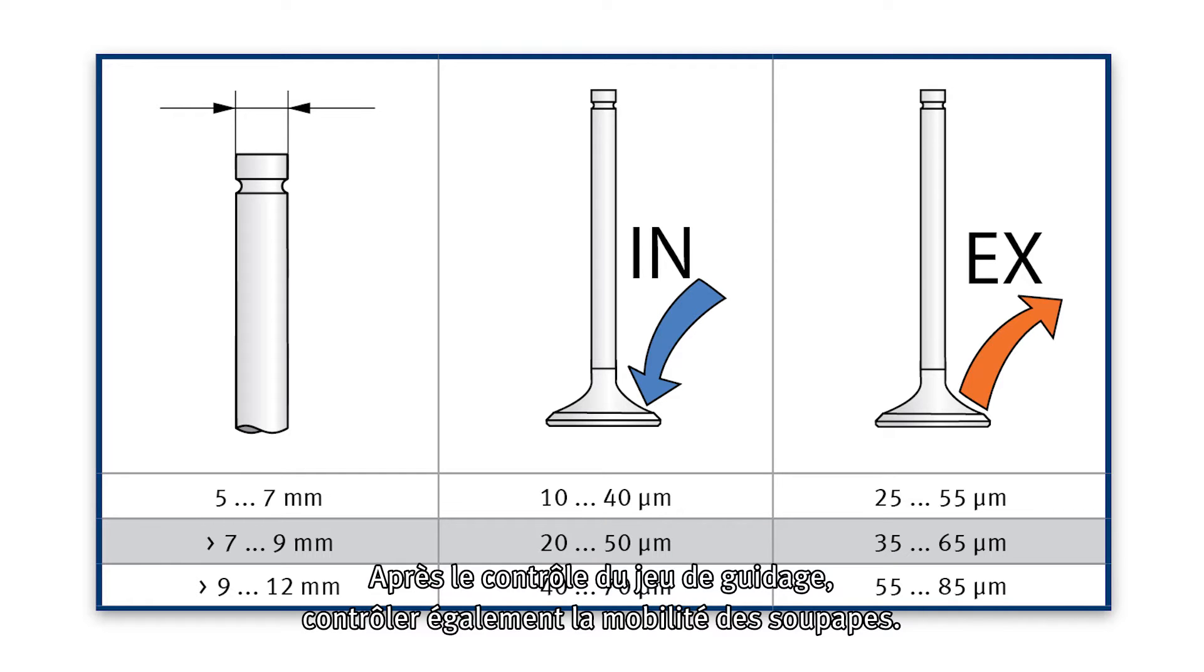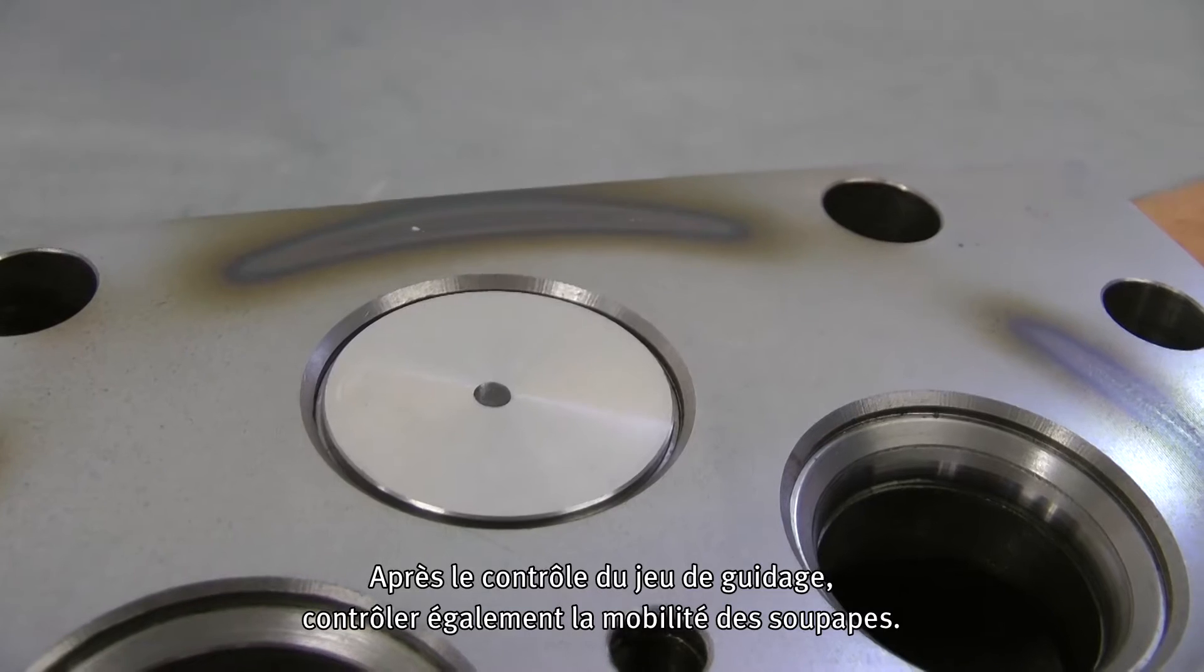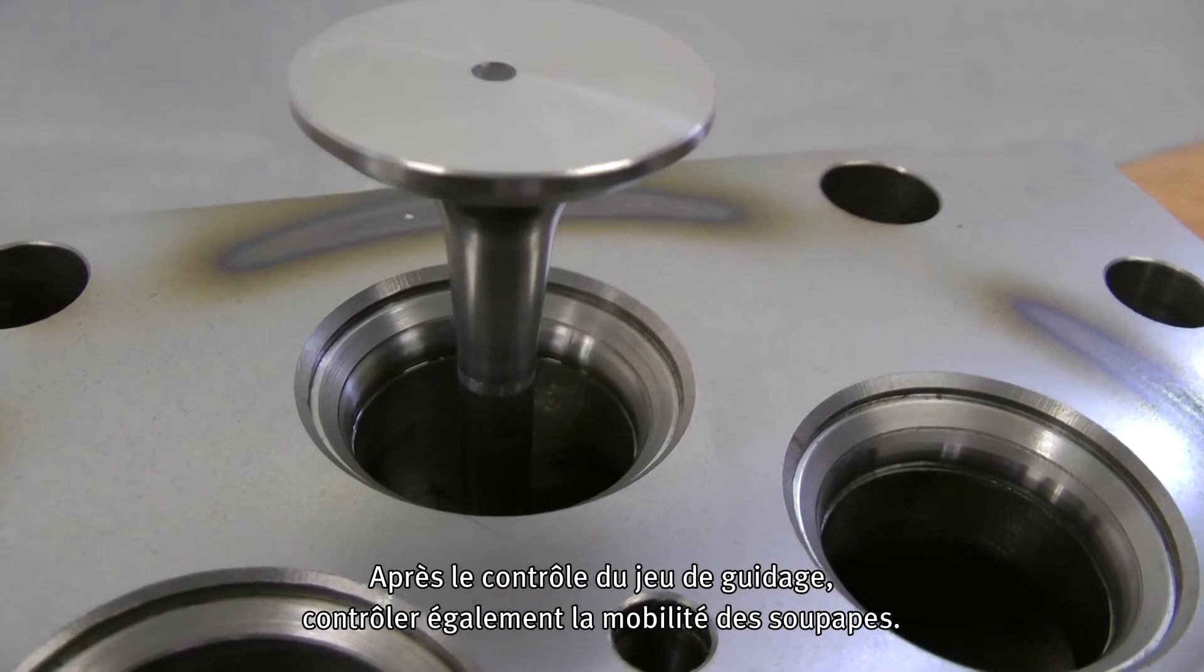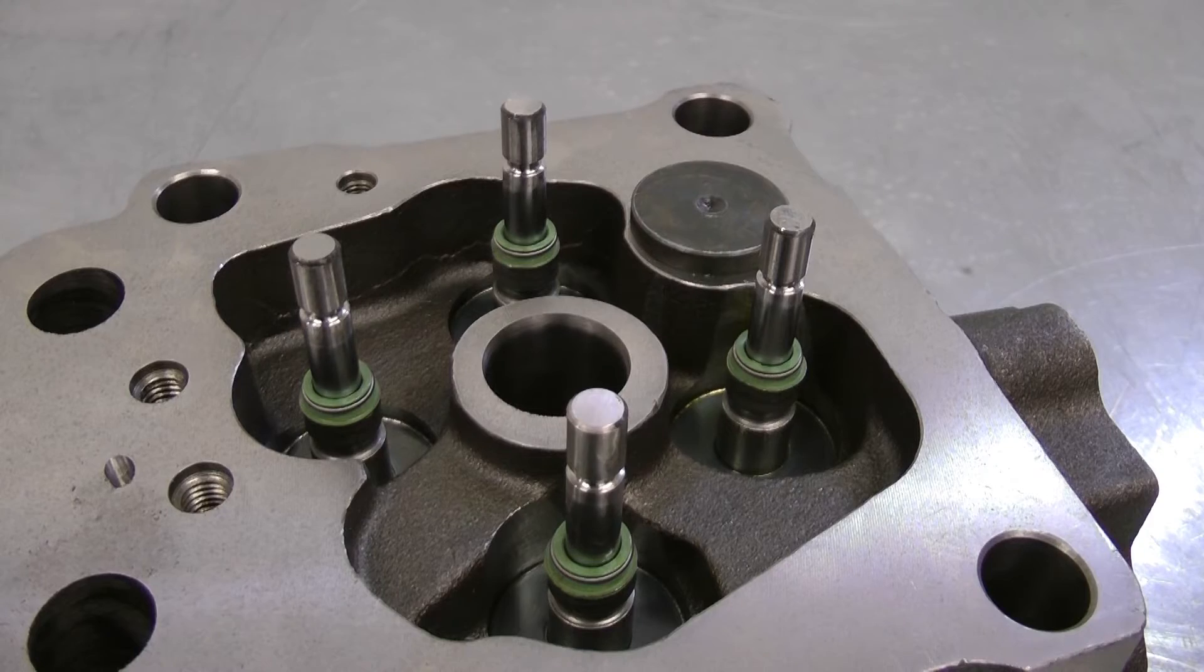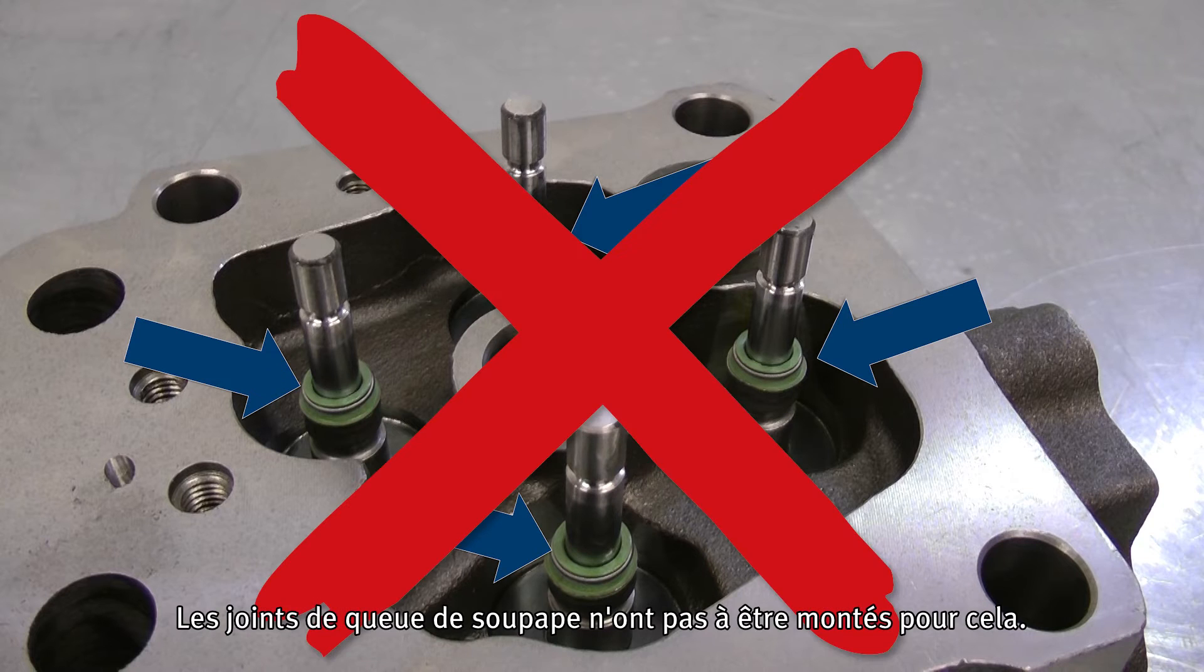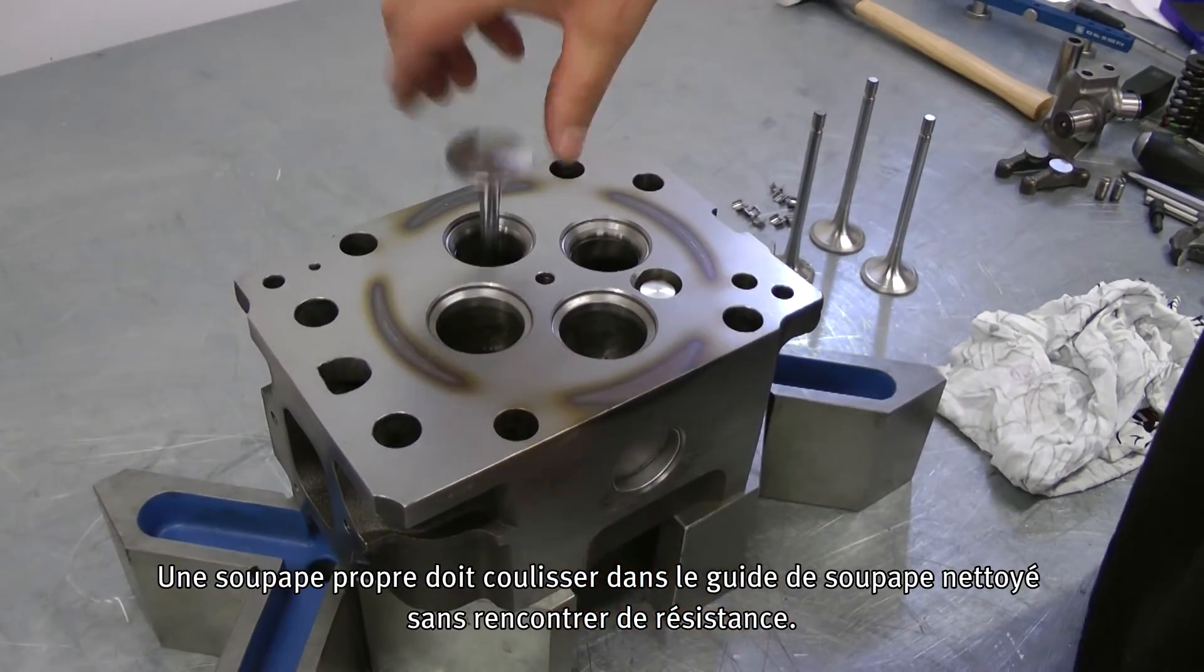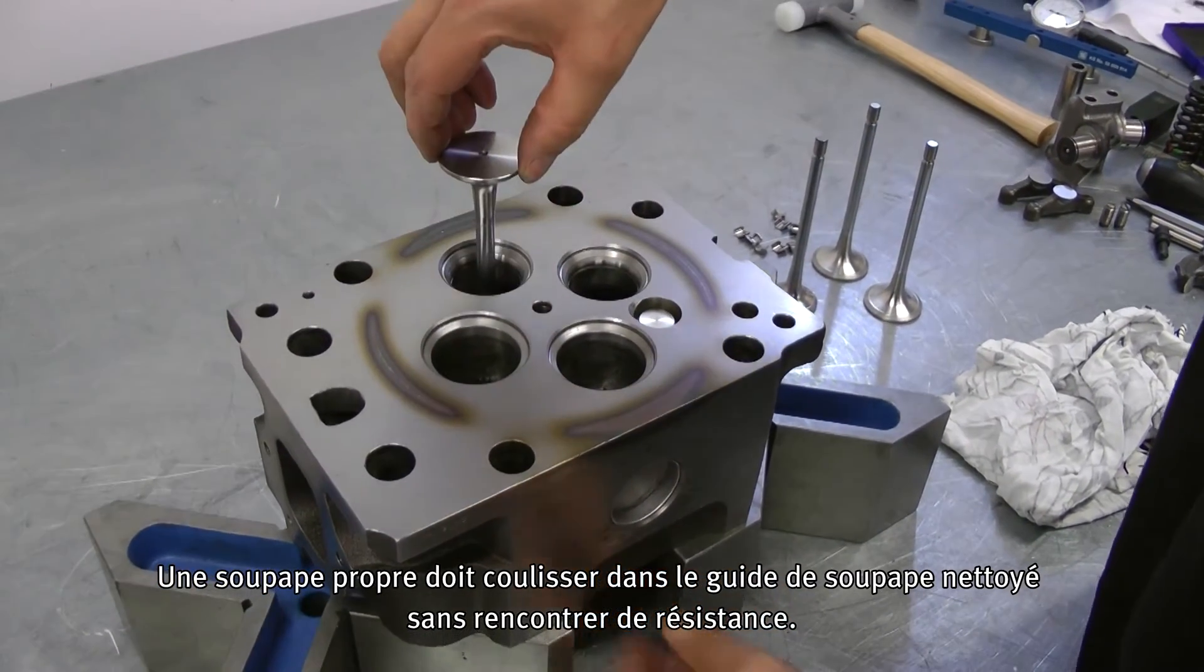After checking the valve guide clearance, the freedom of movement of the valves must also be checked. The valve stem seals must not be installed for this. The clean valve must glide into the clean valve guide without resistance during testing.